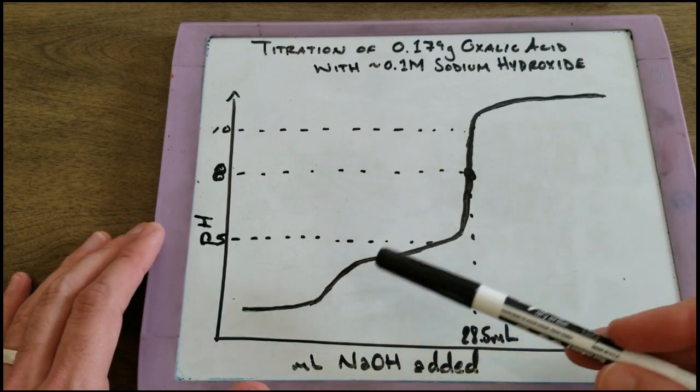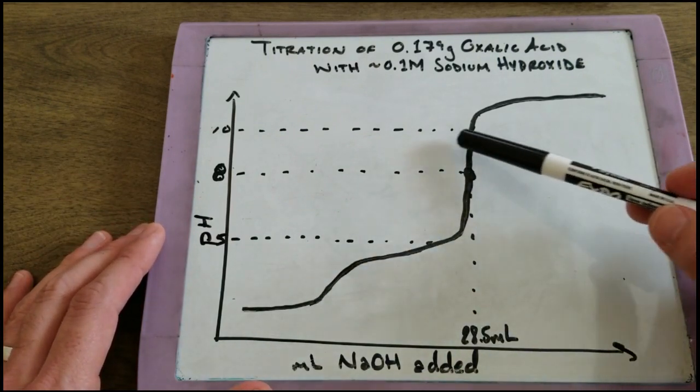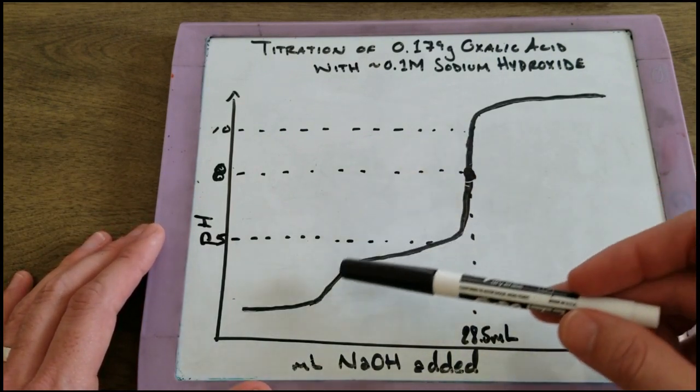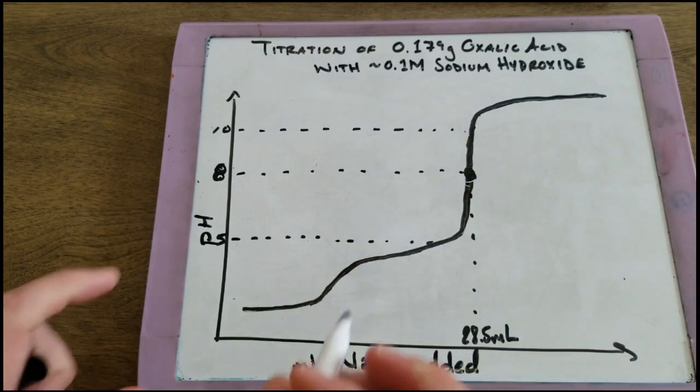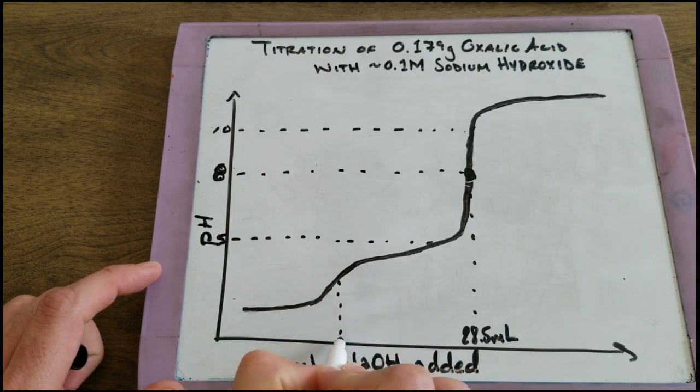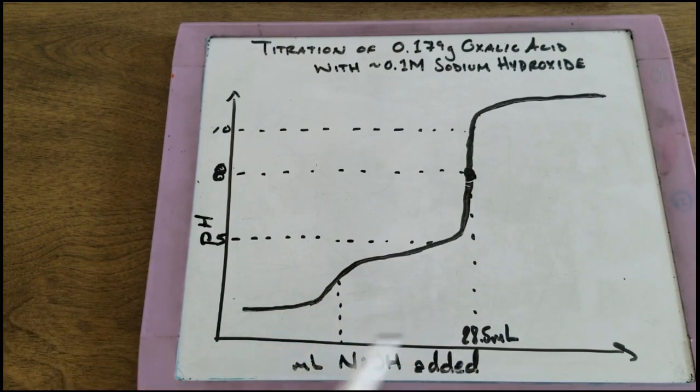What's interesting about this graph is we see that there are two steep sections. This is the one we were most concerned with. There's also this steep section here and this steep section actually occurred, the midpoint of it, at half of this volume.